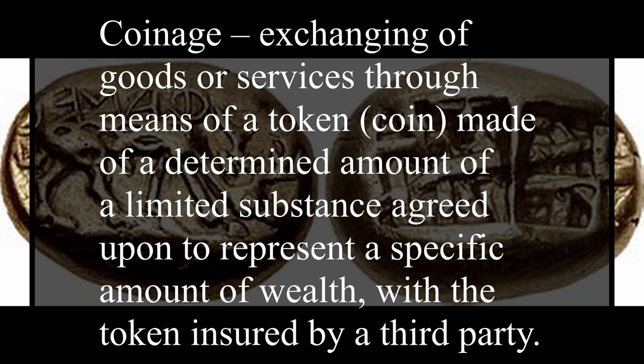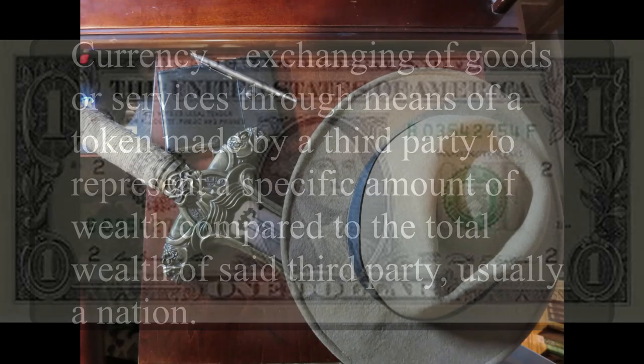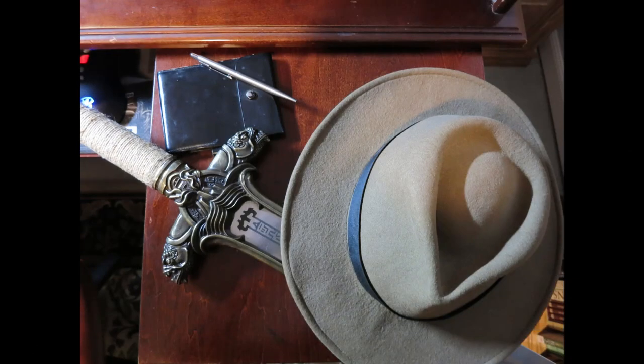Now it is currency — the fifth system. Currency is the exchanging of goods or services through means of a token made by a third party to represent a specific amount of wealth compared to the total wealth of that third party, usually a nation. This is the most common system in the world today, following the ending of gold standards. These are the five different types of tools, and they can be used within all three of those exchange systems.